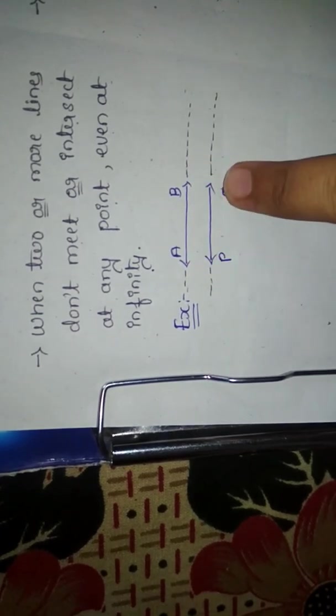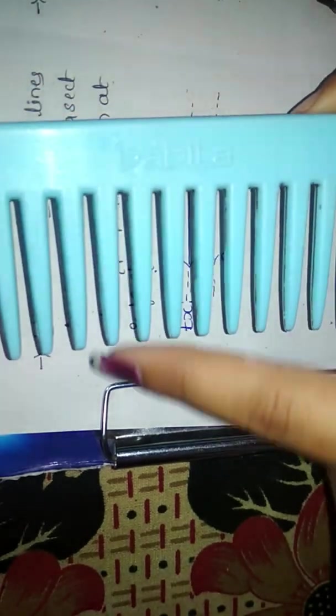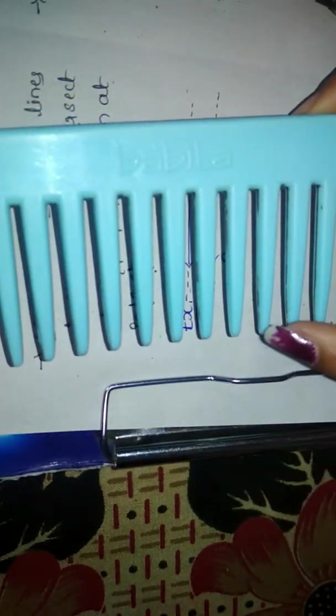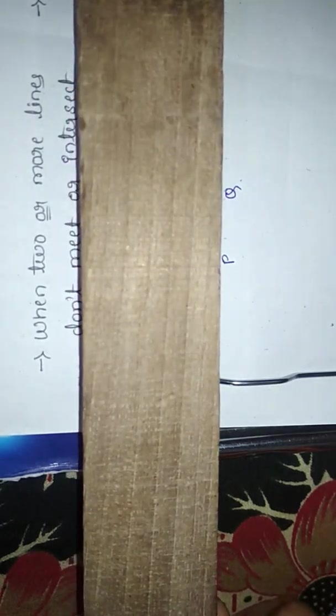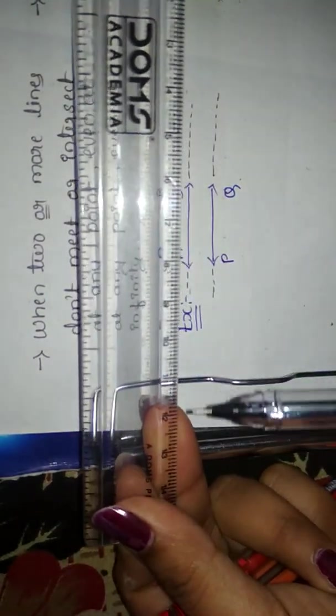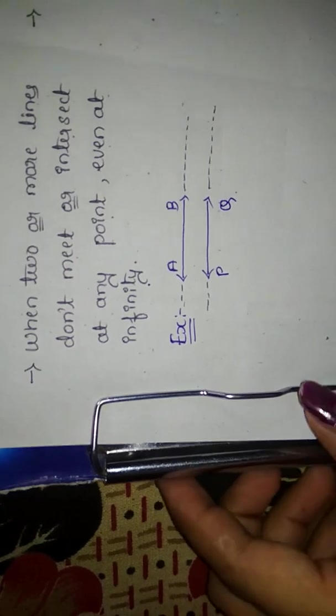Day-to-day life examples of parallel lines: here you can see a comb — the strips in the comb are not meeting each other. Some more examples: the edges of a stick are like parallel lines. And a scale — the edges of the scale are also an example of parallel lines.